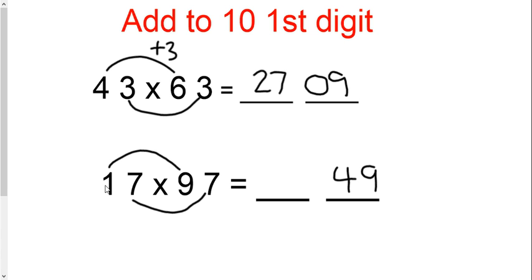Then, you're going to multiply one times nine is nine. Don't forget to add the seven to your answer. One times nine is nine, plus seven is sixteen.